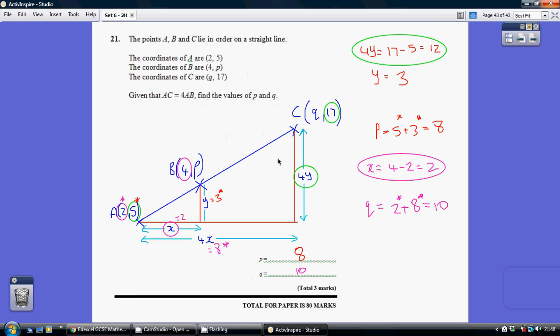Alright, so let's start off by trying to figure out P. Now, we need to work out what this height here is and then add that to 5 and that will tell us what the Y coordinate P is. So how do we work out this height here?